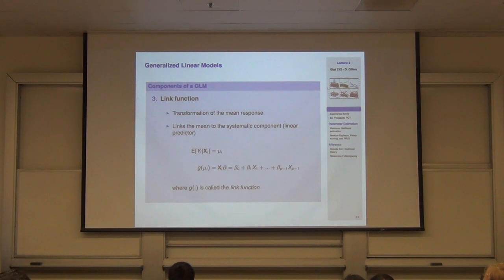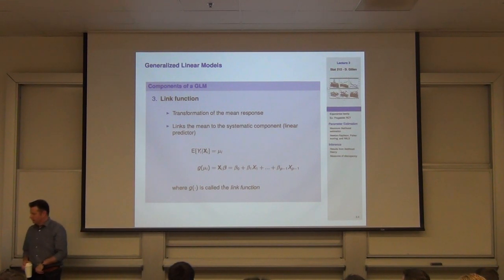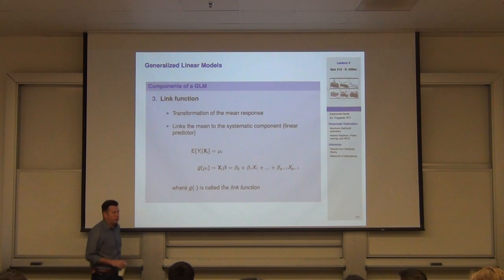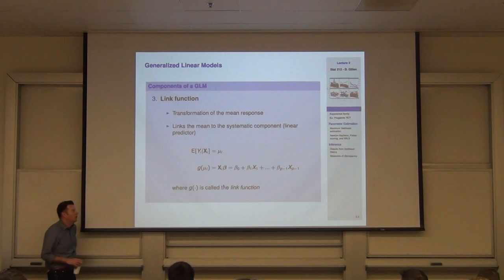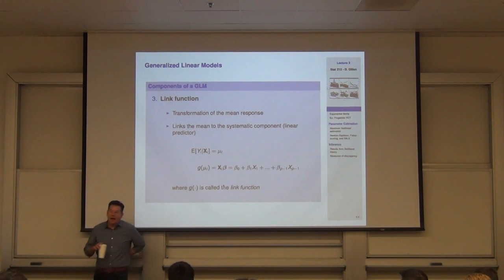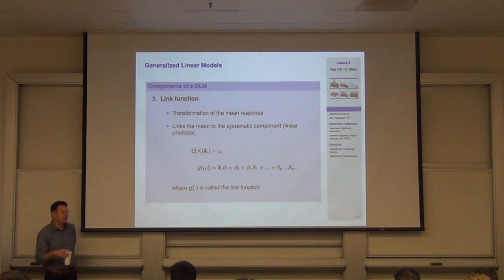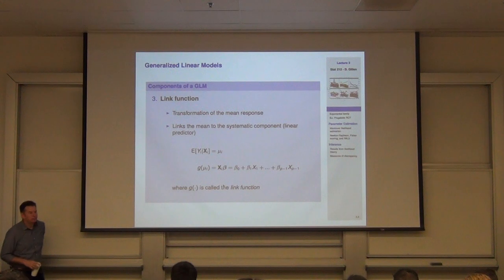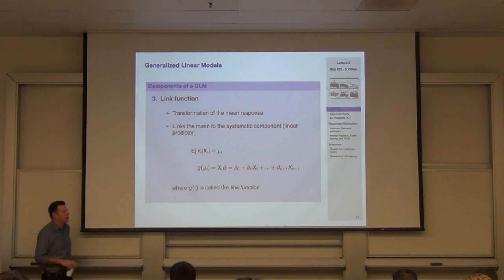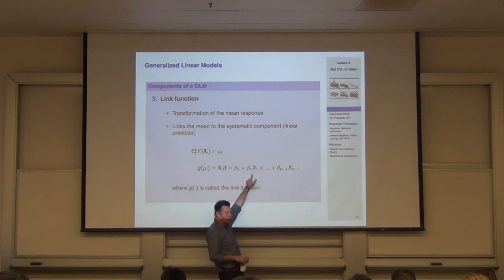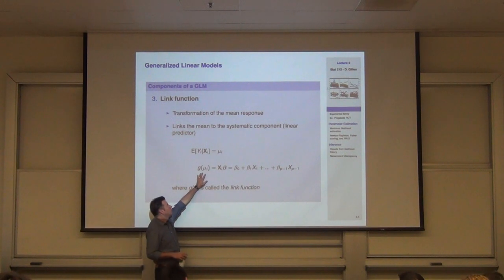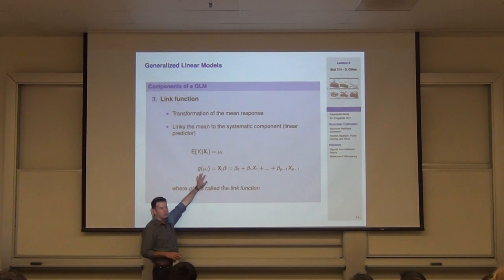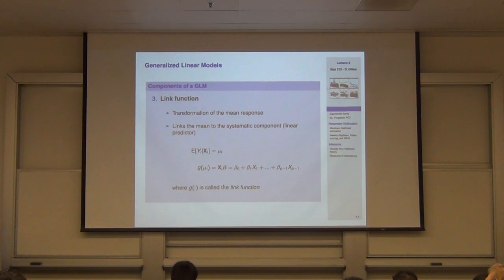What are the guiding principles in choosing a link G? One is the interpretation of the betas — the scientific question. What contrast do I want to form across subpopulations? For example, a log link puts me on a multiplicative mean model scale, so I'm thinking about relative differences in means. The other reason is the support of the linear predictor: it ranges from minus infinity to infinity, so generally you want to take G such that G of mu also takes on values from minus infinity to infinity — common support.